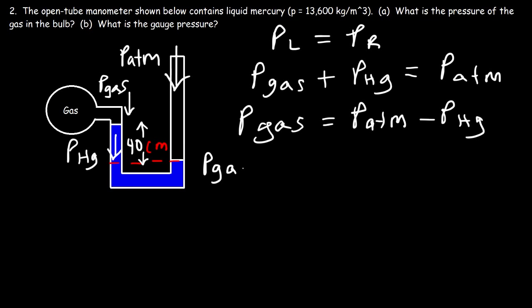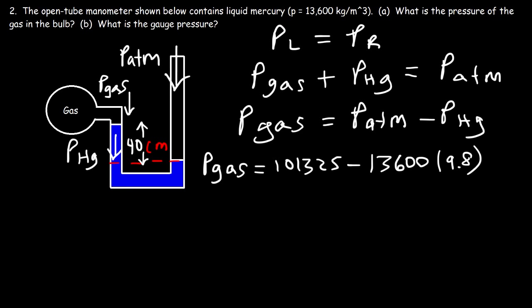The atmospheric pressure is 101,325 pascals. This equals rho·g·h: the density of mercury is 13,600, g is 9.8, and the height difference is 40 centimeters, which is 0.4 meters. So the pressure of the gas is 48,013 pascals.